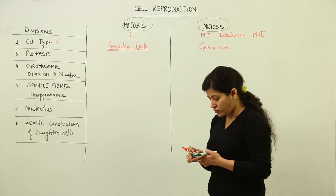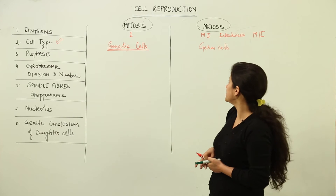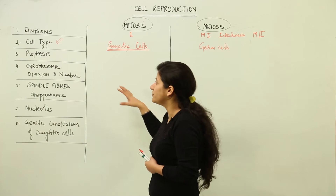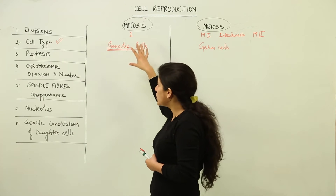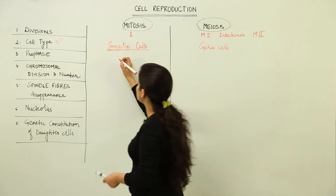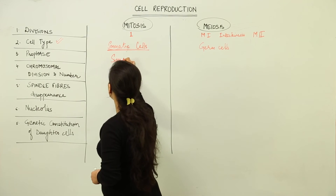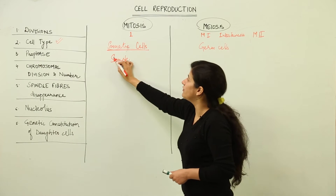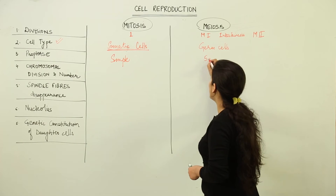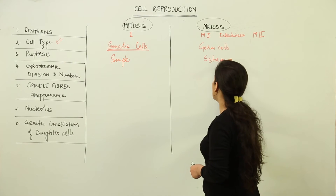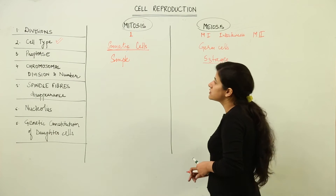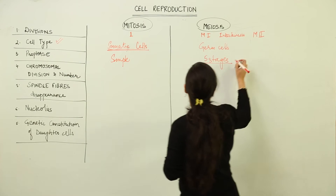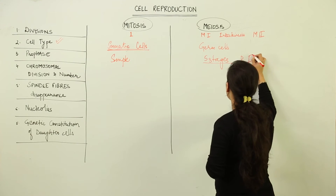Then we talk about prophase. As we studied, prophase is the most important stage in meiosis — too much activity takes place in prophase. The prophase of mitosis is quite simple, whereas in meiosis it has five further stages. This complex meiosis is because of a complex prophase one, which has five stages.